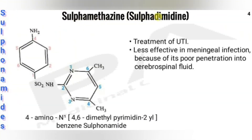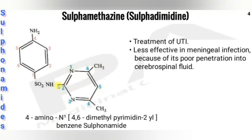The next drug is sulfamethazine, otherwise called sulfadiamidine. It has the sulfanilamide moiety connected to a pyrimidine ring with two methyl groups. Because of the pyrimidine ring it is called sulfadiamidine. It has the pyrimidine nucleus with two methyls at the fourth and sixth positions. The chemical name is 4-amino-N-(4,6-dimethylpyrimidin-2-yl)benzenesulfonamide, since the nitrogen connects at the second position of pyrimidine.